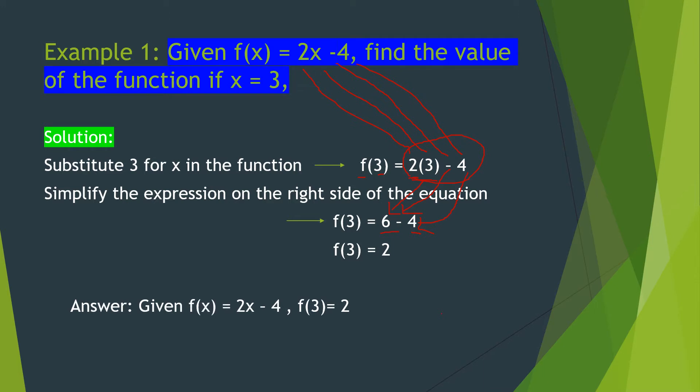Therefore, our answer is f of 3 is equal to 2, because 6 minus 4 is equal to 2. So given the function f of x is equal to 2x minus 4, when x is equal to 3, the value of the function is equal to 2. Do you have any question on that?